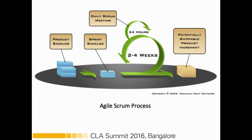Let's discuss the agile scrum process. Basically, if you have a large project, you divide it into smaller parts called the product backlog, and each product backlog is separated into small manageable parts. Each sprint backlog has a maximum time duration of up to two to four weeks, determined by the programmer or developer. Each day there will be a daily scrum meeting to check the progress of the project. When following the agile scrum process, the product or application is always shippable — there will be workable code at all times.